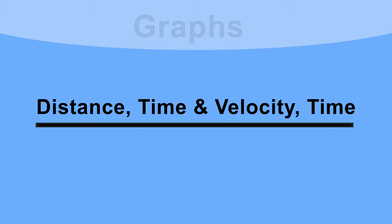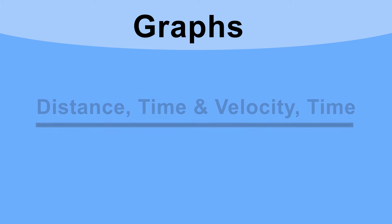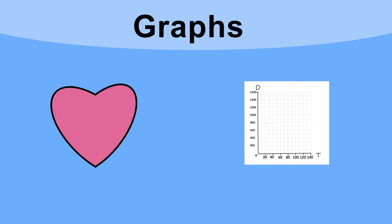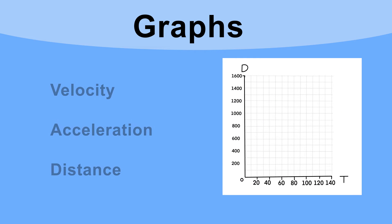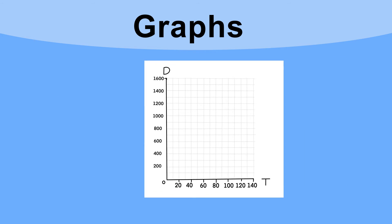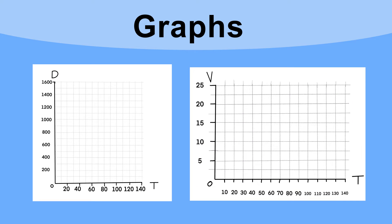Distance-time and velocity-time graphs. Something us physicists love is showing stuff on a graph, and velocity, acceleration, and distance are no different. We have two types of graphs we use here: a distance-time graph and a velocity-time graph.